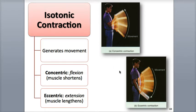Isotonic contractions involve a muscle maintaining the same constant tension while the muscle length is either increasing or decreasing. There are two types of isotonic contractions, concentric and eccentric. A concentric isotonic contraction involves flexion of the muscle where the muscle shortens in length, pulls on a tendon, and generates movement.